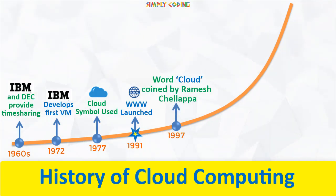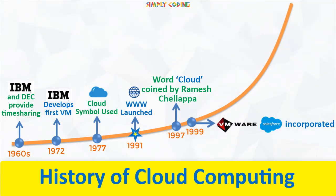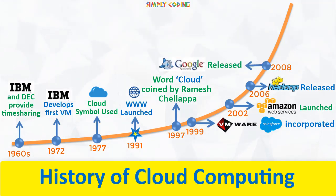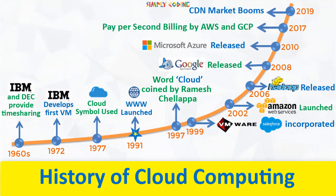The word cloud itself was coined by Ramesh Chalapa in 1997, and was used as a metaphor for the internet. The cloud symbol was used to represent the network of computing equipment. In 1999, cloud companies such as Salesforce and VMware were incorporated. In 2002, Amazon launched Amazon Web Services. In 2006, Hadoop was released. In 2008, Google launched Google App Engine. In 2010, Microsoft released Microsoft Azure. And in the next few years, almost everyone jumped onto the cloud computing bandwagon.